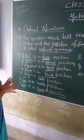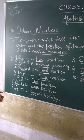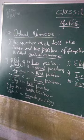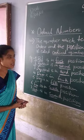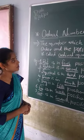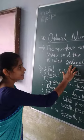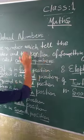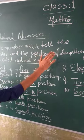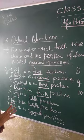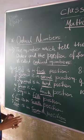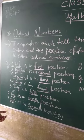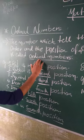The Ordinal Number is the number which tells the order and the position of something. It is called Ordinal Number.